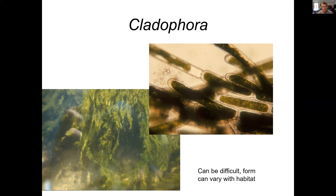Here's a green alga that's common throughout the world: Cladophora. It illustrates some difficulties because if you take Cladophora that's branched like the one in the upper right of the slide and grow it in still water growth media, it won't branch anymore — you'll get something that looks more like Rhizoclonium. A lot of times genetic methods end up being the final way to determine these.